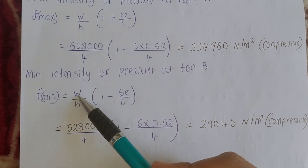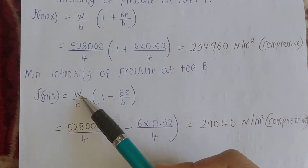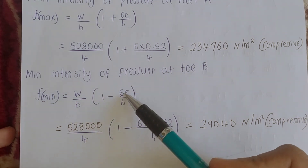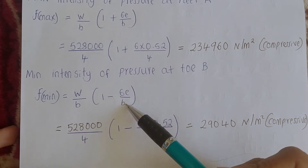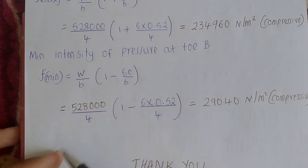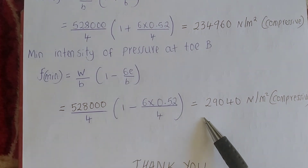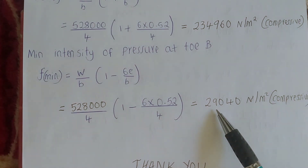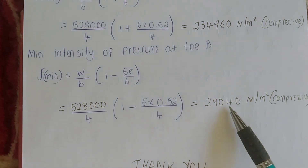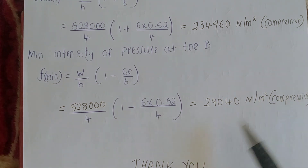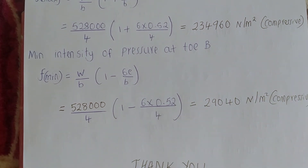Then the minimum pressure intensity at point A: f_min equals W/b × (1 − 6e/b). Substituting the values, when you calculate it you get 29,040 Newtons per meter squared, compressive — because the answer is positive. If you get a negative answer, that would be tensile.